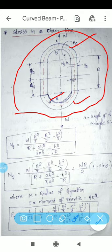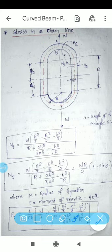The chain link consists of two semicircular sections joined with two straight sides. The distance 'a' is the length of the straight side.